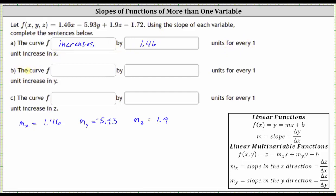For part b, we're concerned about the slope in the y direction. The slope in the y direction is negative 5.93. Because it's negative, the curve f decreases by 5.93. Notice how here, we do not include the negative. The negative indicates the curve is decreasing. So the curve is decreasing by 5.93 units for every one unit increase in y.